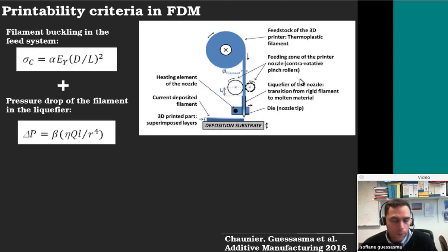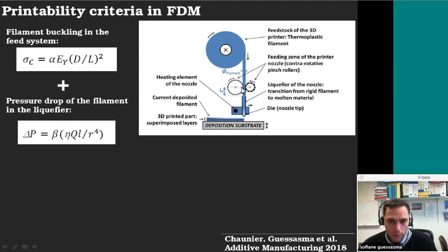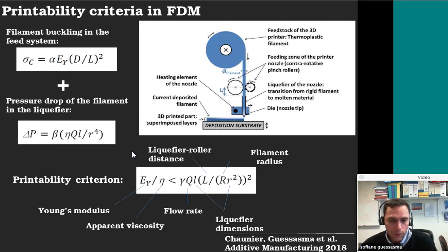Before going into some details, I want to emphasize some criteria for FDM. We have here a typical sketch showing the printer working. You have the feedstock filament that comes in the form of a wire, driven by pinch rollers, going into the liquefier that reduces its dimension, and coming out at the end in a quasi-solid state. Typically, to make sure your polymer is printable, the force applied on the filament should not overcome the filament buckling force, but at the same time it should be larger than the pressure drop in the liquefier. This gives you a first criterion for printability, based on the ratio between the Young's modulus and the melt viscosity.